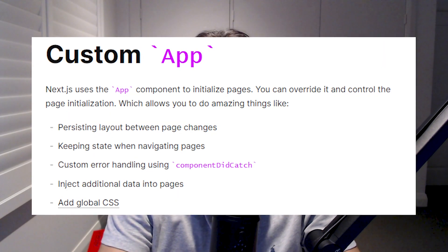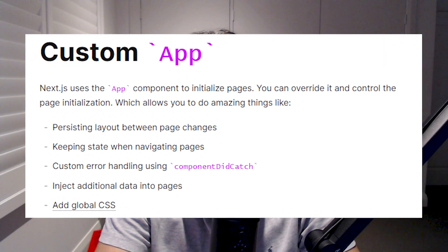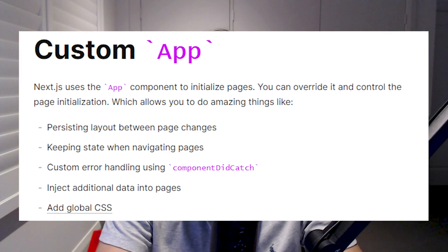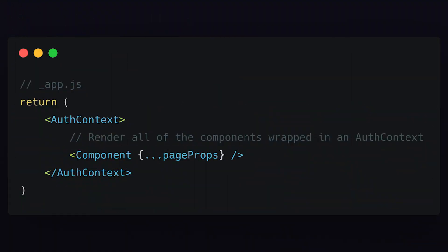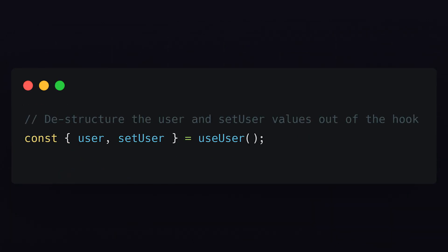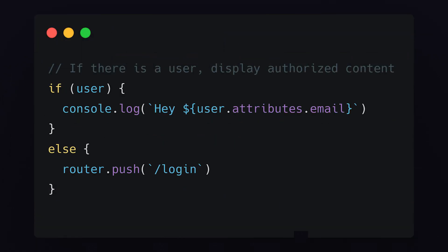In this example, I'm using Next.js's custom app, which wraps all of my pages in the auth context so that any one of my pages can access that user. Then inside one of my components, I can destructure both of these values out of the useUser hook and access the user and all of its attributes as if it were any other variable.